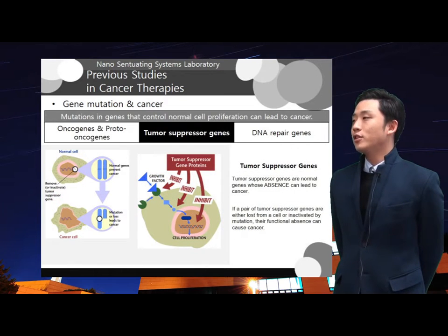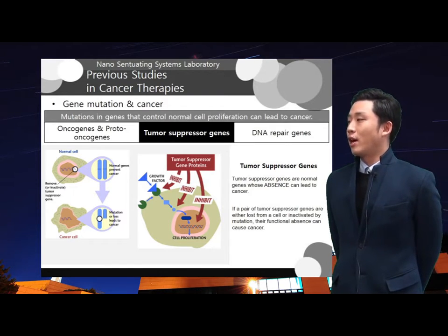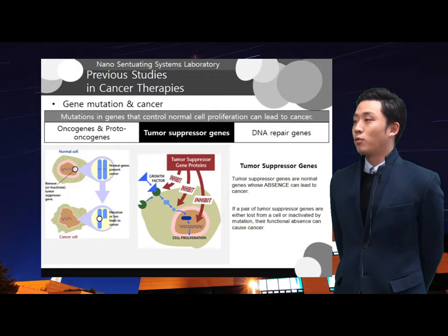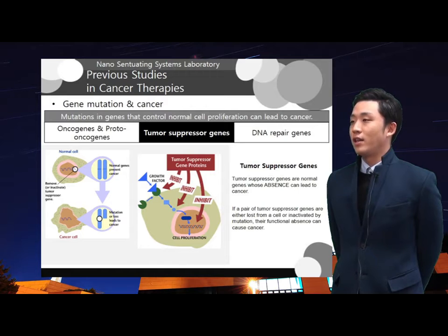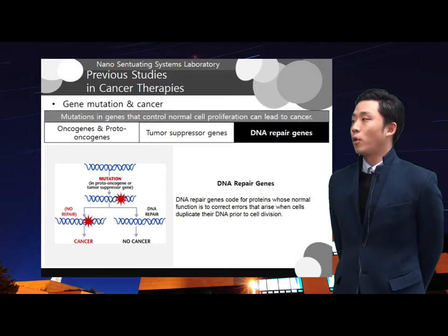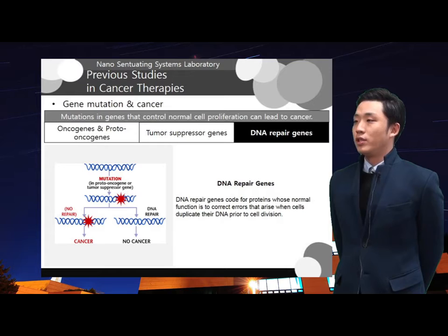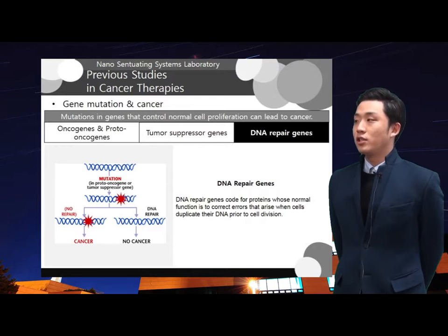Tumor suppressor genes are normal genes whose absence can lead to cancer. Since tumor suppressor genes code for proteins that slow down cell growth and division, the loss of such proteins allows a cell to grow and divide in an uncontrolled fashion. For DNA repair genes, they code for proteins whose normal function is to correct errors that arise when cells duplicate their DNA prior to cell division. Mutations in DNA repair genes can lead to a failure in DNA repair, which in turn allows subsequent mutations in tumor suppressor genes and proto-oncogenes to accumulate.